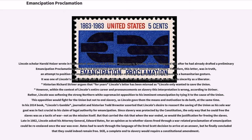But that carried the risk that when the war ended, so would the justification for freeing the slaves. Late in 1862, Lincoln asked his Attorney General, Edward Bates, for an opinion as to whether slaves freed through a war-related proclamation of emancipation could be re-enslaved once the war was over. Bates had to work through the language of the Dred Scott decision to arrive at an answer, but he finally concluded that they could indeed remain free. Still, a complete end to slavery would require a constitutional amendment.